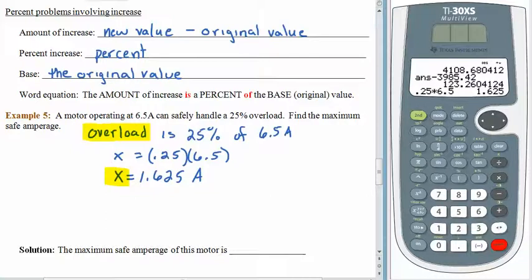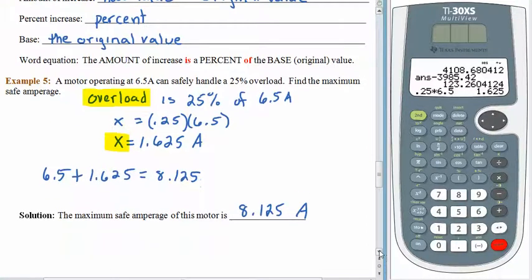The maximum safe amperage is not 1.625 amps. Right? It can already operate at 6.5. So the maximum has got to be bigger than that. We, of course, need to take the overload and add it to the 6.5. So we have 6.5 plus 1.625. And that's 8.125. So periodically this motor can handle 8.125 amps if it needs to. Alright. On to the next page. We're almost done. Hopefully you're seeing and feeling that these problems are all the same because they are. We just have to read carefully.